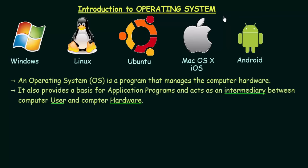An Operating System, also abbreviated as OS, is a program that manages the computer hardware. It also provides a basis for application programs and acts as an intermediary between the computer user and computer hardware. Before we understand these two lines, I will be explaining it with a diagram.